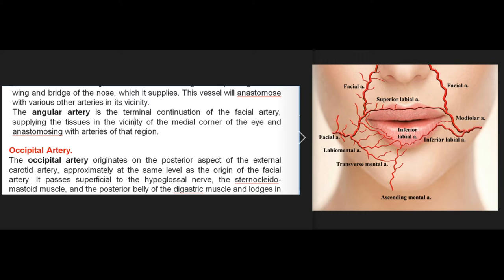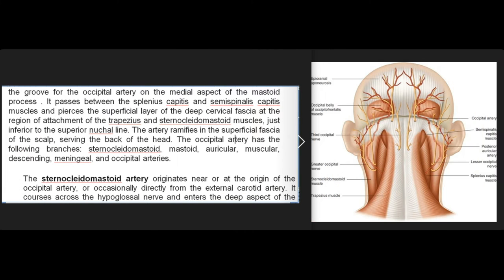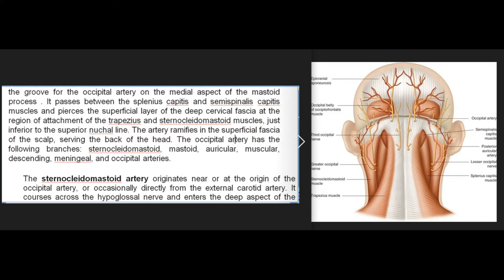The occipital artery originates on the posterior aspect of the external carotid artery, approximately at the same level as the origin of the facial artery. It passes superficial to the hypoglossal nerve, the sternocleidomastoid muscle, and the posterior belly of the digastric muscle, lodging in the groove for the occipital artery on the medial aspect of the mastoid process. It then passes between the splenius capitis and semispinalis capitis muscles, pierces the superficial layer of the deep cervical fascia, and ramifies in the superficial fascia of the scalp to serve the back of the head. Its branches include the sternocleidomastoid, mastoid, auricular, muscular, descending, meningeal, and occipital arteries.